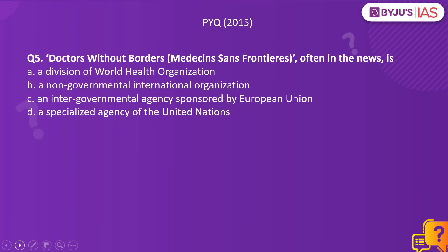Now a previous year question from the 2015 Prelims paper: Doctors Without Borders, or Médecins Sans Frontières, often in the news, is — (a) a division of the World Health Organization, (b) a non-governmental international organization, (c) an intergovernmental agency sponsored by the European Union, or (d) a specialized agency of the United Nations. Doctors Without Borders is a non-governmental and non-military organization established by a group of French doctors in 1971, best known for projects in conflict zones and countries affected by endemic diseases. The right answer is option B.